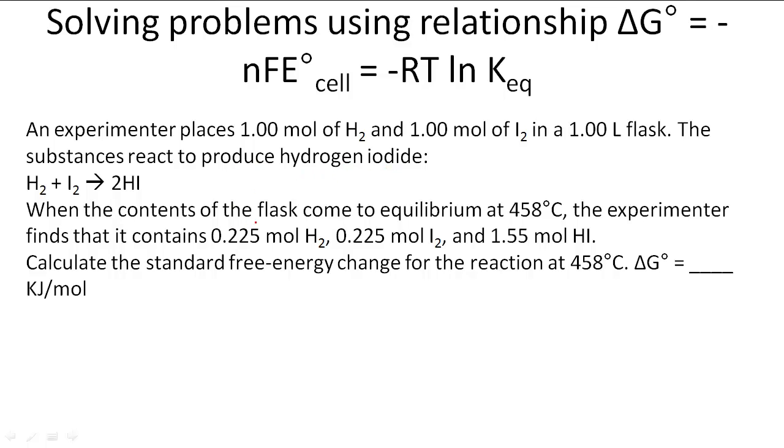When the contents of the flask come to equilibrium at 458 degrees Celsius, which is 731 Kelvin, the experimenter finds that it contains 0.225 moles of H2, 0.225 moles of I2, and 1.55 moles of HI.